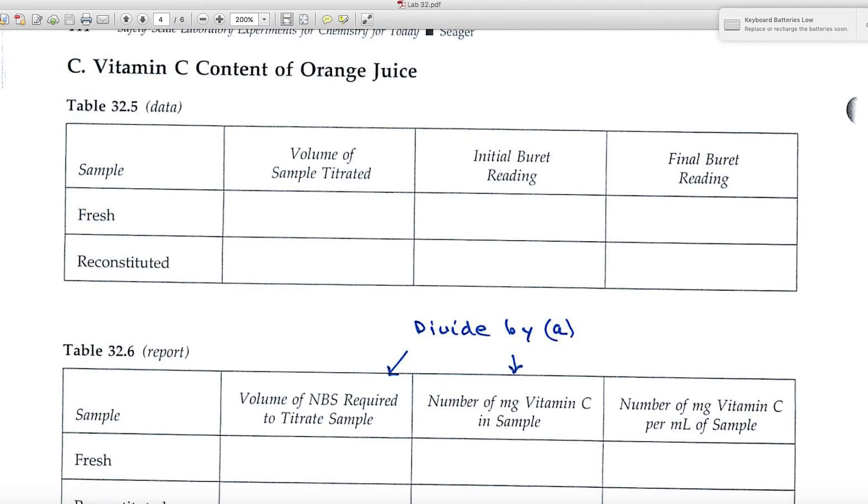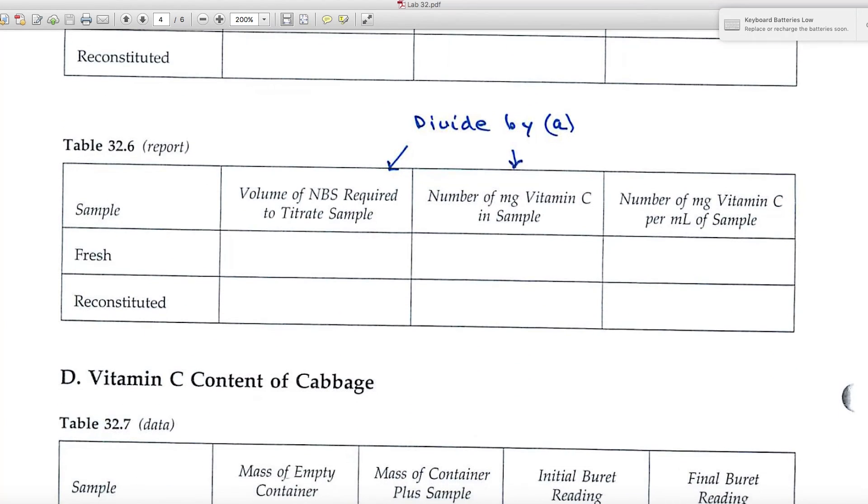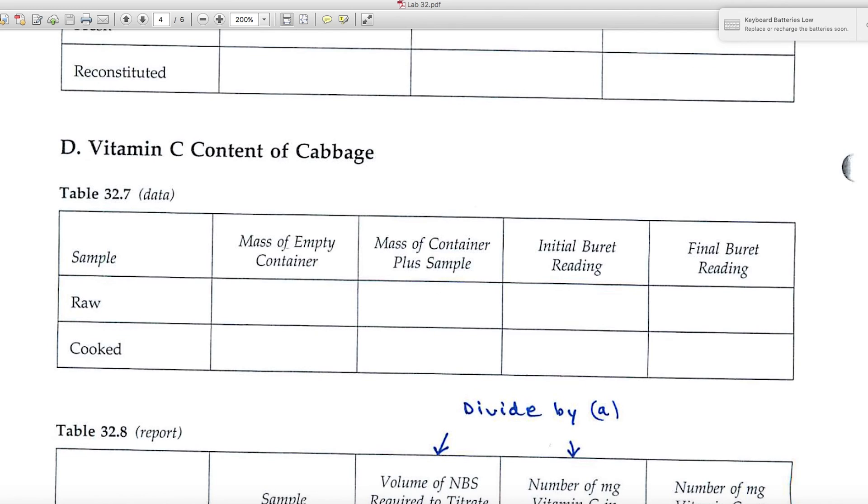Part C deals with the vitamin C content of orange juice. Volume titrated, you know what that'll be. You'll have initial and final burette readings. You'll use that data then in the report for table 32.6. The volume of NBS required will be the difference in the burette readings, and you'll divide that value by a to get this number here. So that'll help you a lot. A is really pretty critical; you use it all the way through the experiment.